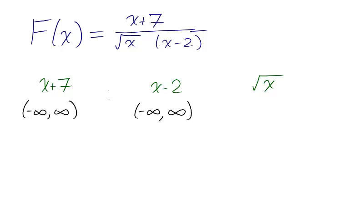x plus 7 and x minus 2 are continuous at all points, as they are polynomials, and polynomials have a domain of all real numbers. The square root of x has domain x greater than or equal to 0, therefore it is continuous on the interval from 0 to infinity.